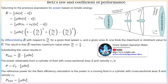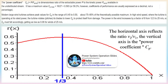The Betz limit is the maximum possible energy that may be derived by means of an infinitely thin rotor from a fluid flowing at a certain speed. To calculate the maximum theoretical efficiency of a thin rotor — for example, a windmill — one imagines it replaced by a disk that withdraws energy from the fluid passing through it. The rotor is assumed to be ideal with an infinite number of blades, no drag, and no hub. Any resulting drag would only lower this idealized value.